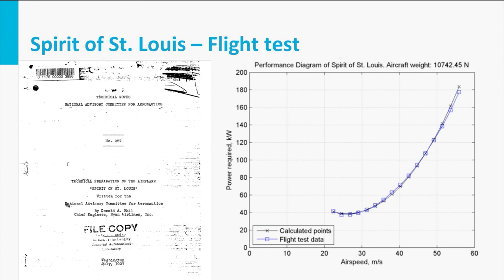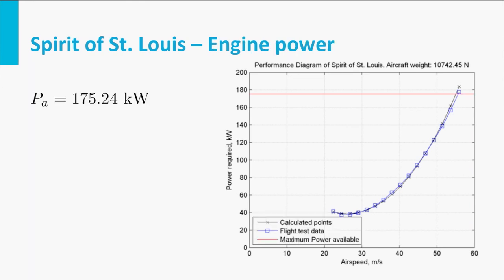Now to complete the diagram, we can plot the maximum power available as published by the engine manufacturer in the diagram. And in the next item, we will calculate the performance of this specific aircraft based on this performance diagram we just derived.